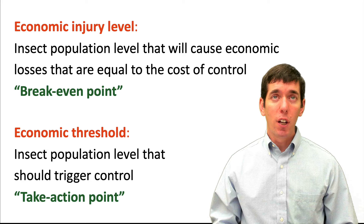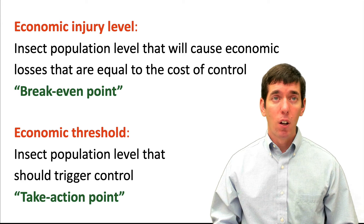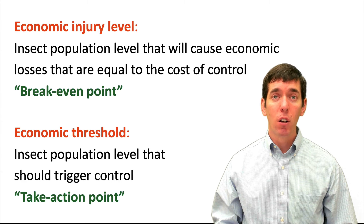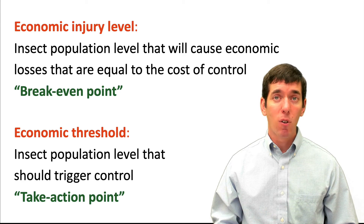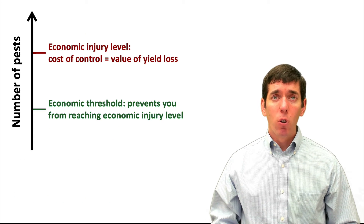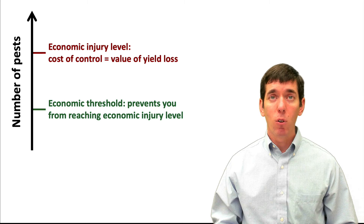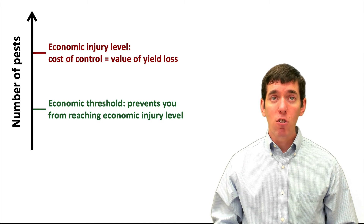Now that's the break-even point — the economic injury level. What we want to do out in the field is protect ourselves from ever reaching that. That's where the economic threshold comes in. That's the insect population level that should actually trigger a control action — your take-action point. That's when it's time to do something to mitigate the pest outbreak, whether that's an insecticide, a transgenic crop variety, a resistant crop variety, a cultural practice, or whatever it might be. That level is always set lower than the economic injury level, to prevent reaching the point where damage equals the cost of control.